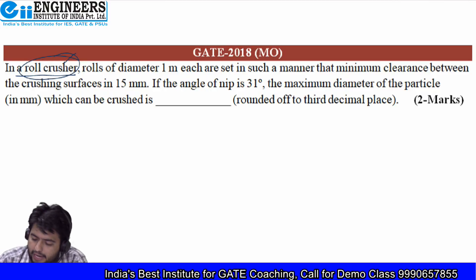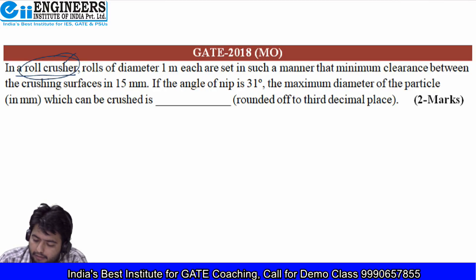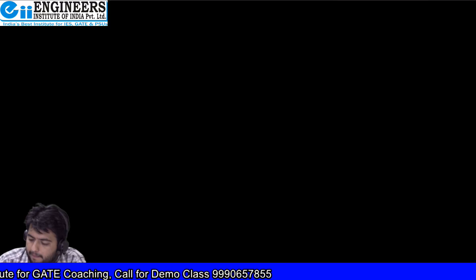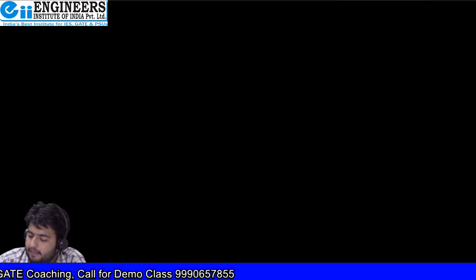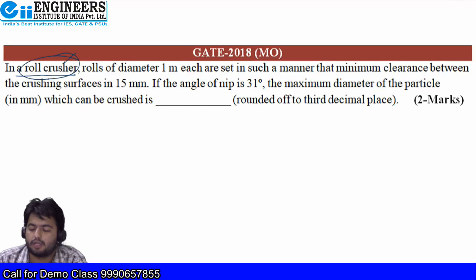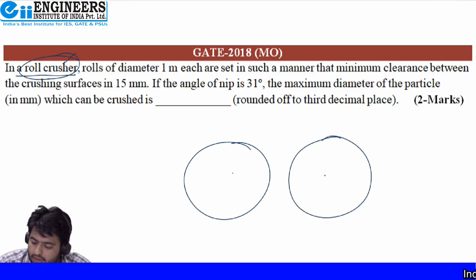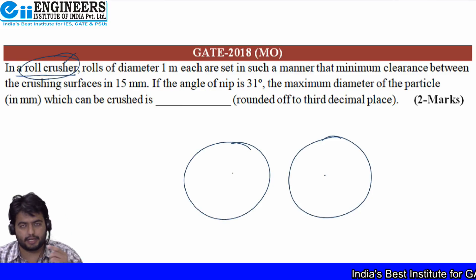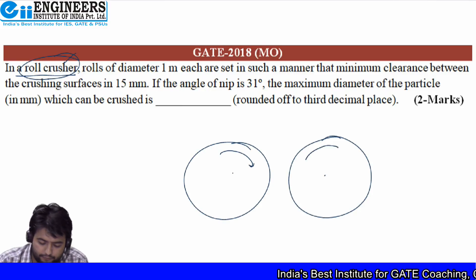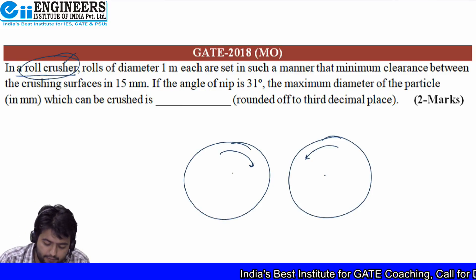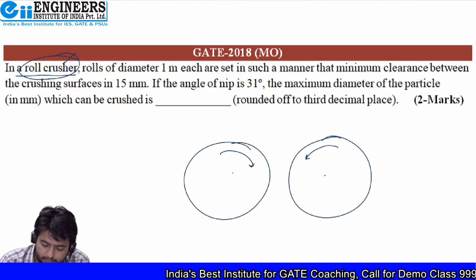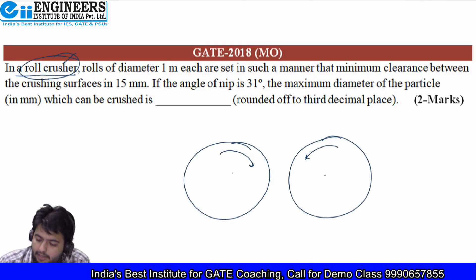In this case, we have two rolls — these two rolls are analogous to a sugarcane juice machine. The two rolls rotate in opposite directions, and the feed is given from the top.